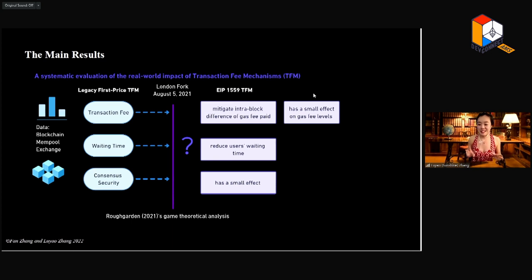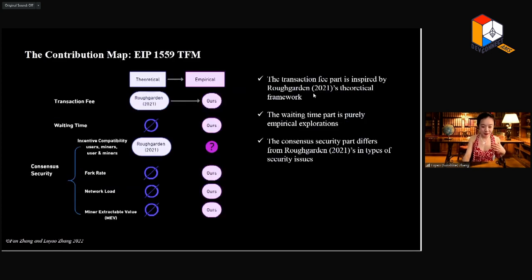Some of the results are really inspired by Professor Tim Roughgarden's game theoretical analysis. Here is kind of our detailed contribution map. For the transaction fee parts, it's really inspired by Professor Tim Roughgarden's work. He showed that the EIP-1559 is not a solution for scalability. In our data, we confirm that we find not much reduction on the gas fee level. For the waiting time, we don't see very systematic theoretical analysis before that, so these are our new theoretical findings for the first time. For the consensus security part, we focused on different dimensions than Roughgarden's work. He focused on the incentive compatibilities of users, miners, and user-miner collusion interactions. In our data analysis, we analyzed the three different dimensions: fork rates, network node, and miner extracted values.